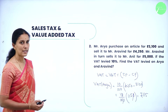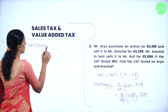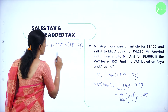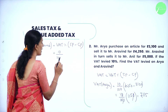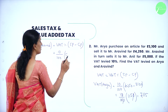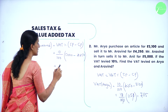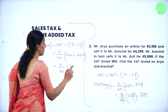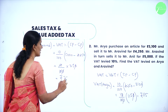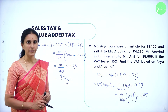Next, we calculate the VAT for Arvind using the same formula: VAT% × (SP − CP). VAT percentage is 10/100. Arvind sold it to Mr. Anil for ₹5000 and bought the article for ₹4250. So it is 10/100 × 750 = ₹75. So the VAT levied on Arya is ₹115 and on Arvind is ₹75.